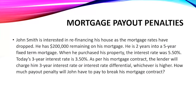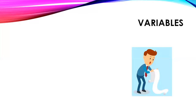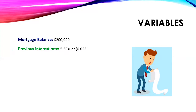In this case, this person has a five-year term and they want to break the term after two years. They want to refinance the mortgage and move to a different lender offering a better interest rate — a scenario we tend to see often. So the mortgage balance is $200,000, the previous interest rate was 5.5%, the current interest rate is 3.5%, and they are two years into a five-year term. These are the variables we need before we can do the calculation.